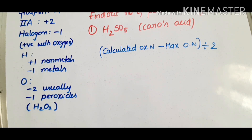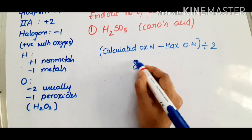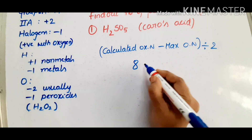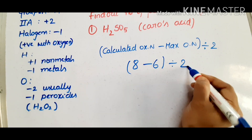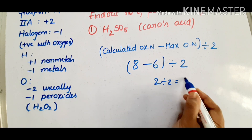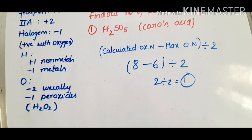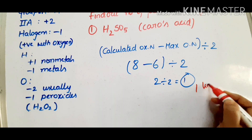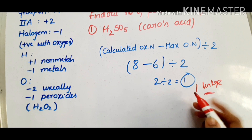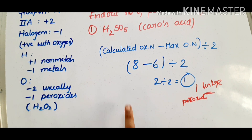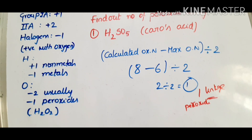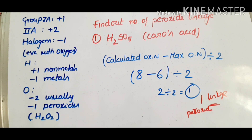You can calculate the oxidation number of sulfur in H2SO5, which comes out to be 8. Then: maximum oxidation state of sulfur is 6. The difference is 8 minus 6 equals 2, divided by 2 equals 1. So there is one peroxide linkage in H2SO5. This is how to find out the peroxide linkages by calculating the oxidation number.